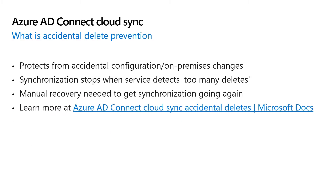The accidental delete prevention feature is designed to protect you from accidental configuration changes or changes in your Active Directory. For example, an admin can accidentally remove an organizational unit from synchronization scope. This would delete all the objects in that organizational unit from Azure Active Directory. However, if you have this feature enabled and configured correctly, the provisioning service will automatically prevent these deletes and will also notify you of the same.